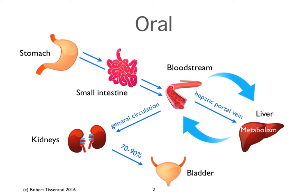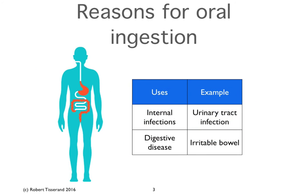17–90% of essential oil that gets into our body is excreted through this route, however it's applied. So in order to have urinary excretion, the essential oil constituents have to be made water soluble. Reasons for oral ingestion include internal infections such as UTIs and digestive disease; urinary infections are particularly amenable to essential oil therapy simply because that is the route of exit from the body.